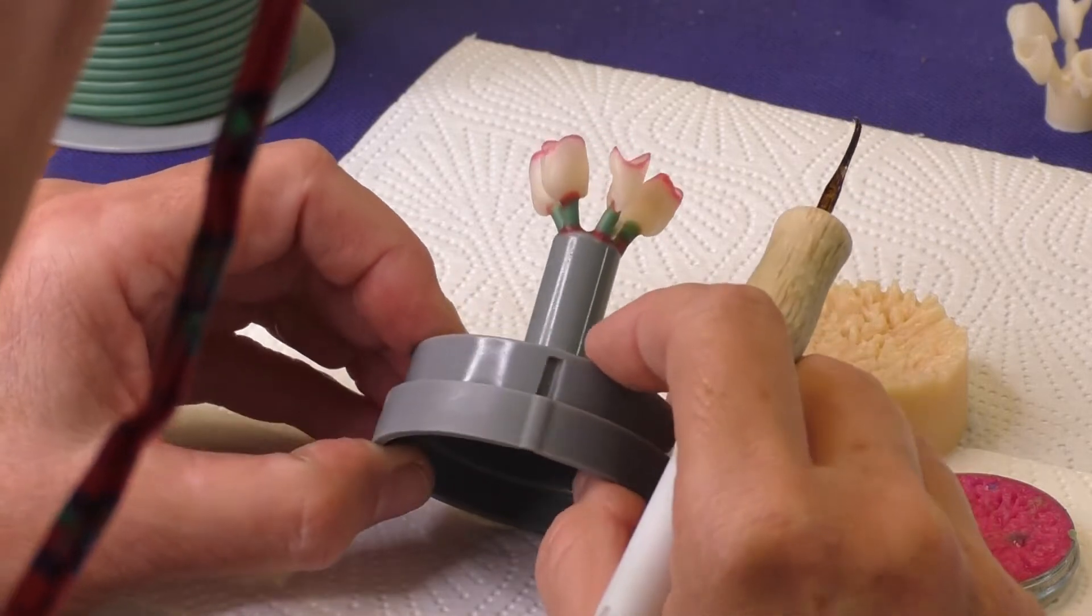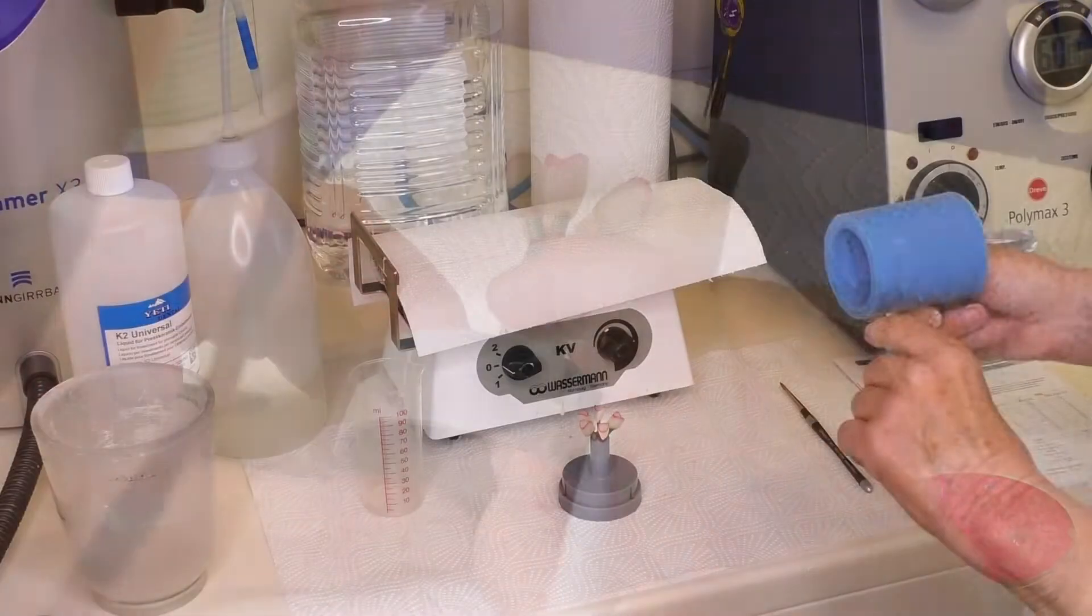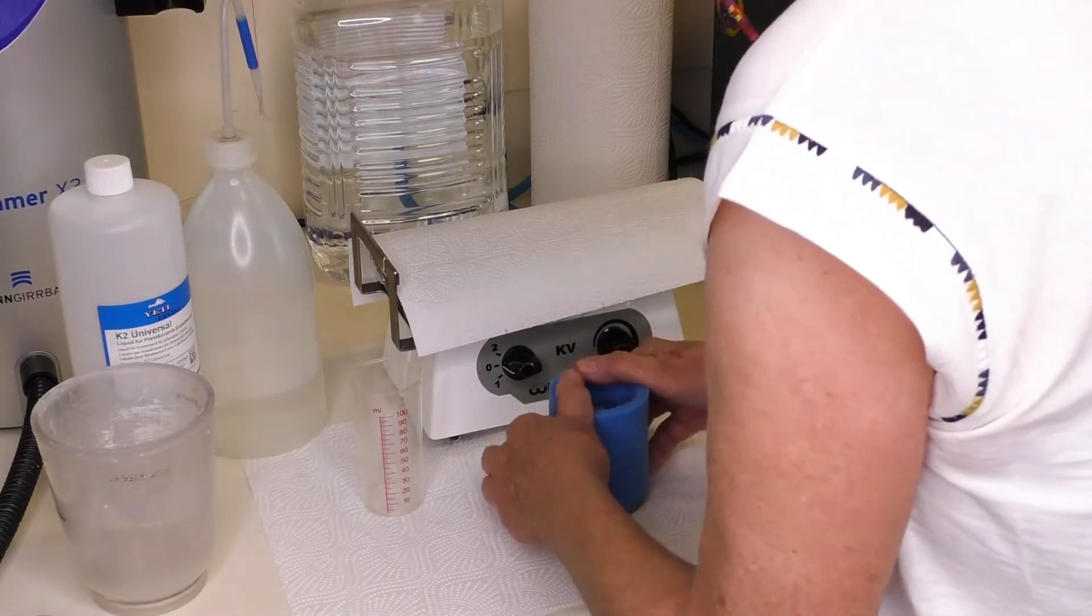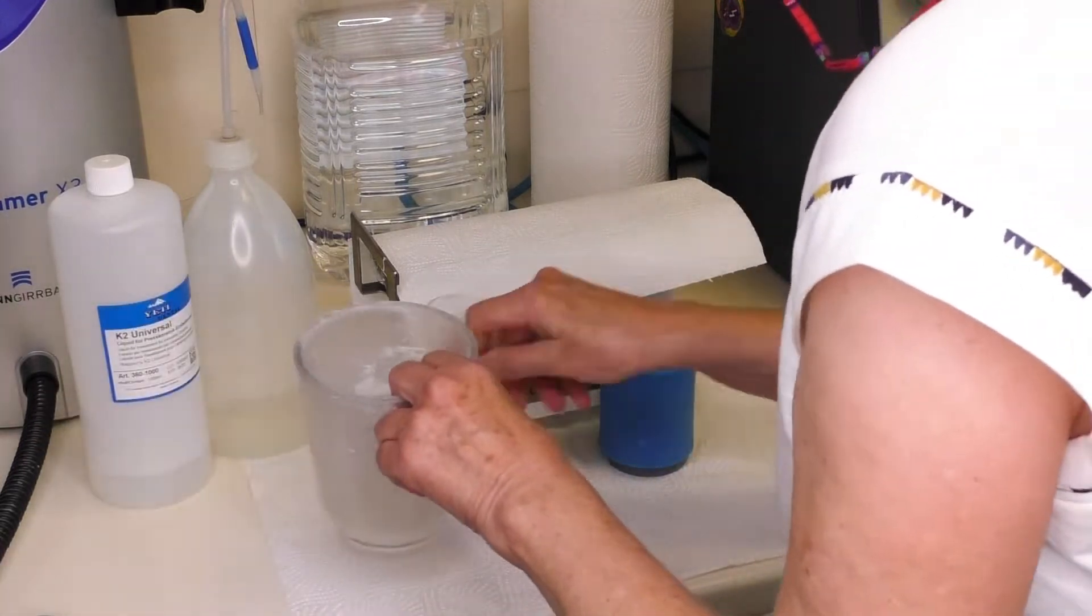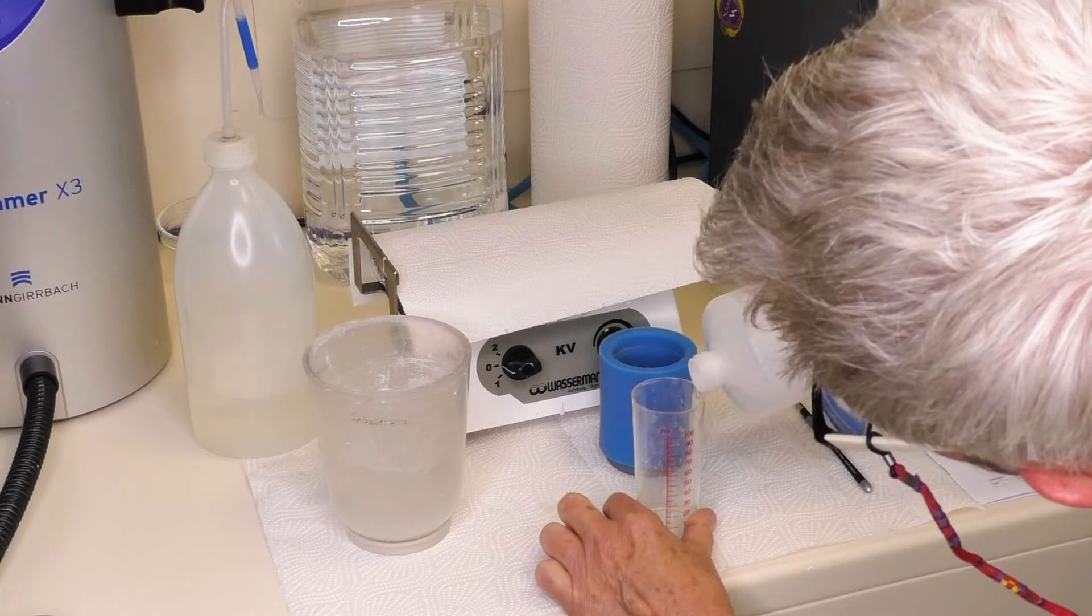The angle when fixing the object on the base should be 45 degrees. Fix the sprue in axial pressing direction. The pressed framework should never be thinner than the layer thickness of the veneering ceramic. It ensures the stability of the construction.